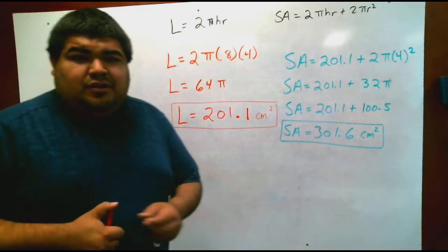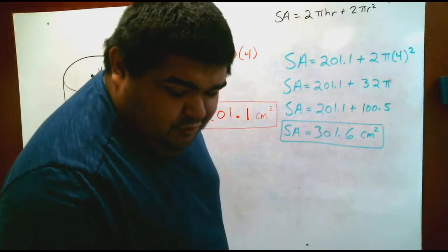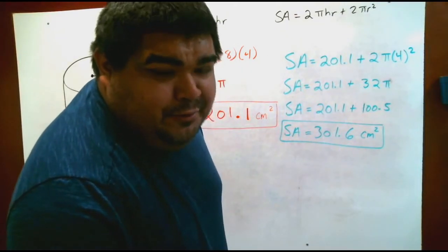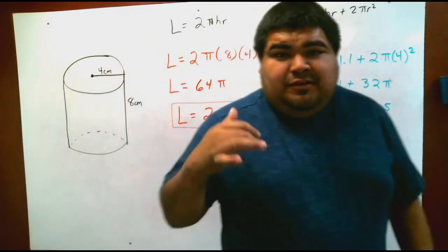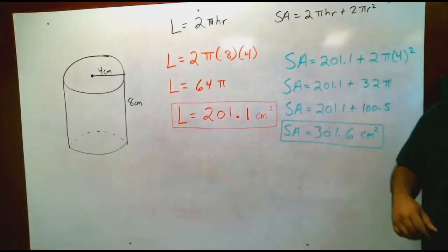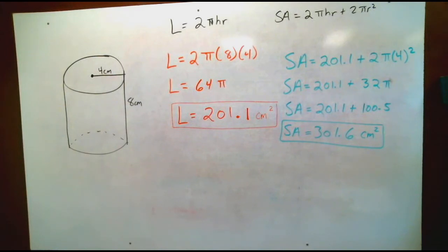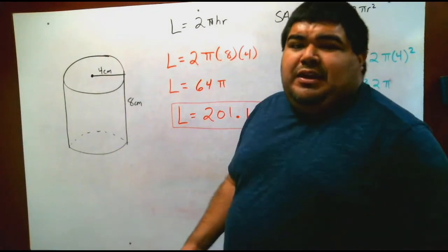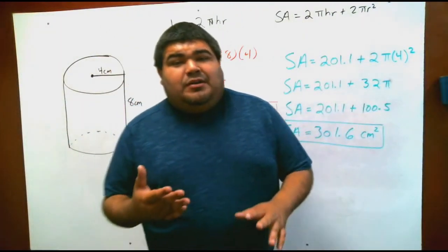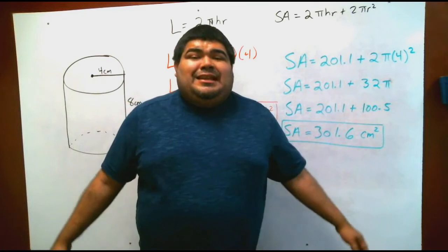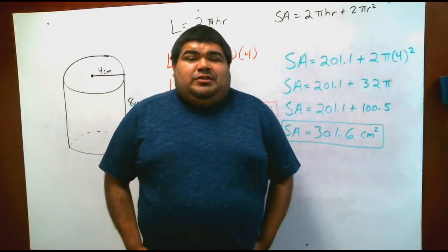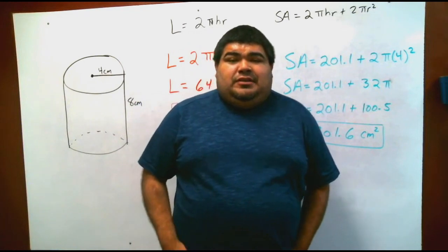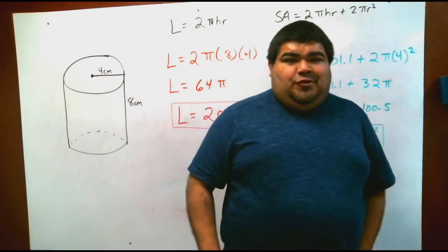And that's it — we've solved for lateral and surface area of a cylinder. Make sure you write this one down as well. I'll step out of the screen so you can write it down. If you need more time, pause the video. If you have any questions, let me know — once you're done watching, check your answers, and I'll be waiting for your email.